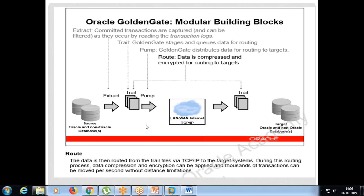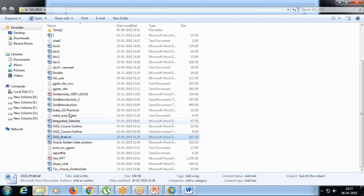Now, Golden Gate - this is like just a normal network. We normally use TCP/IP, and if you want, we have an option to compress and encrypt, but that is only based on your client's requirement. In the pump, we have two parameters: RMT host and RMT trail. Based on that only, it will understand.